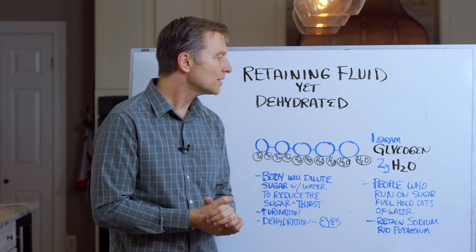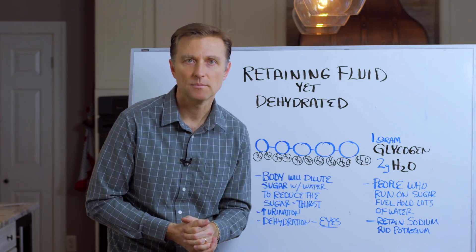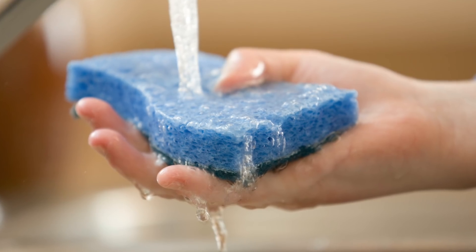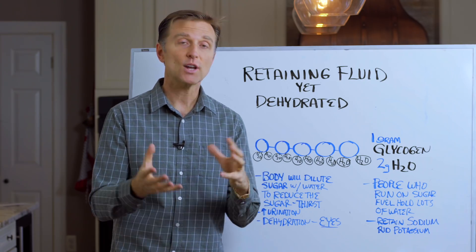Now, check this out. One gram of glycogen bonds to two grams of water. So basically, glycogen is a fluid-filled sponge. There's a lot of water there.